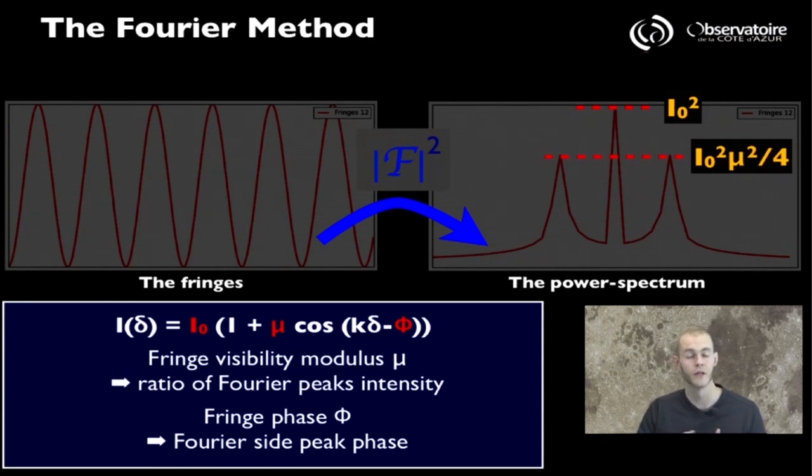To extract the visibility modulus and the fringe phase, in the case of the visibility modulus, you simply take the ratio of the intensity of those side lobe peaks by the intensity of the central peak. And that gives you direct access to the visibility modulus. And for the phase, in theory, what you simply have to do is look at the phase of the Fourier component that you've extracted, simply by computing the Fourier transform in that space.